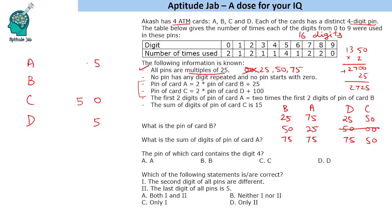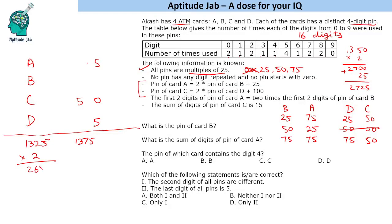Now for the condition: the first two digits of card A's PIN equals two times the first two digits of card B's PIN. Let's test with three hypothetical examples. Suppose B is 1325, then A = 2 × 1325 + 25 = 2675, and 26 = 2 × 13 — yes, that works. Suppose B is 1350, then A = 2 × 1350 + 25 = 2725, and 27 ≠ 2 × 13 = 26 — that fails. Suppose B is 1375, then A = 2 × 1375 + 25 = 2775, and 27 ≠ 2 × 13 — that also fails.